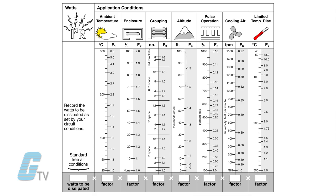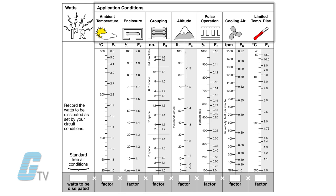Here I have a shortcut provided by Ohmite. As you can see, the factors are dependent on the application conditions. This can include ambient temperature, enclosure, grouping of parts, altitude, pulse operation, cooling air, and limited temperature rise. After following this chart and using the factors provided, I can multiply this with my watts to get my watt size.